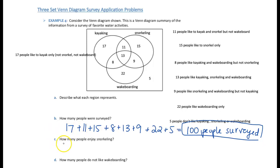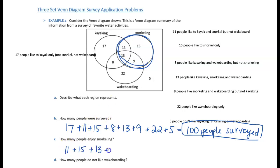Part C asks how many people enjoy snorkeling. We take everything within the snorkeling set: 11 + 15 + 13 + 9. Combining all of those together, we get 48 people.